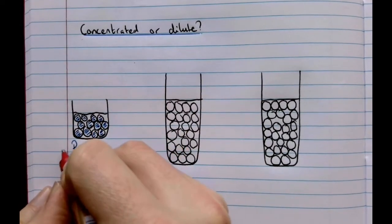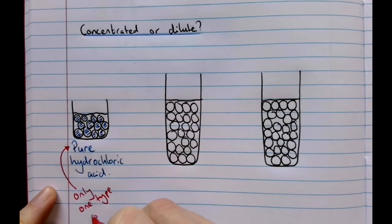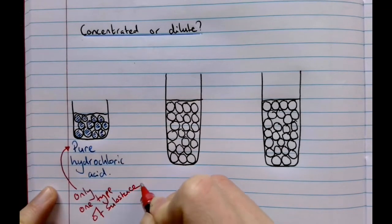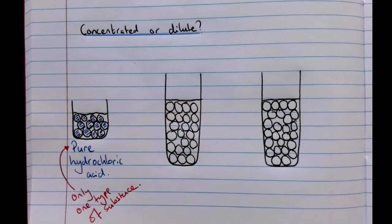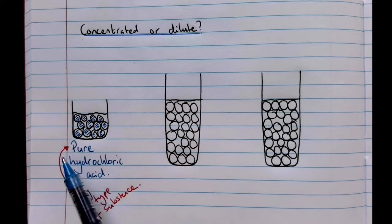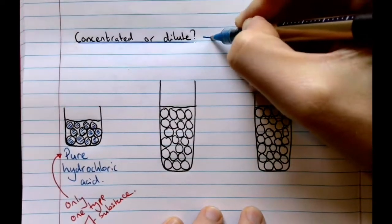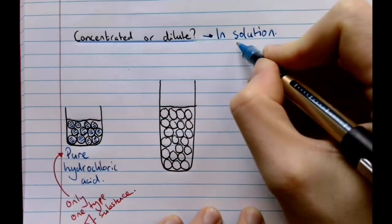The word 'pure' in science has a very specific meaning: only one type of substance. You might see 'pure mineral water' at the supermarket, but that still contains many substances, so that's a different use of the word. In science, pure means only that one thing is present. Generally we won't use pure hydrochloric acid — we'll use it as a solution, dissolved in water.